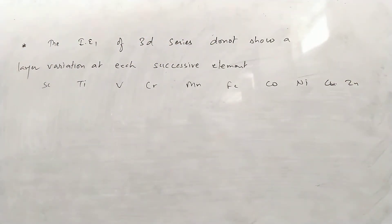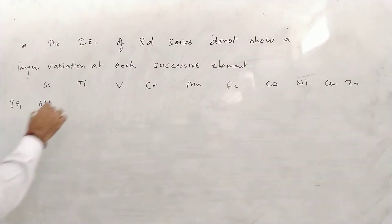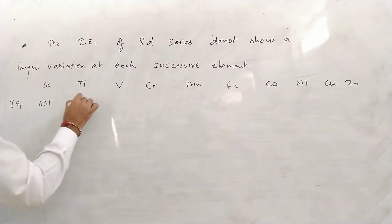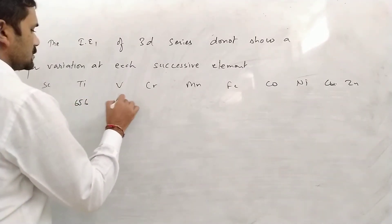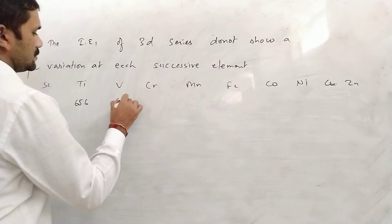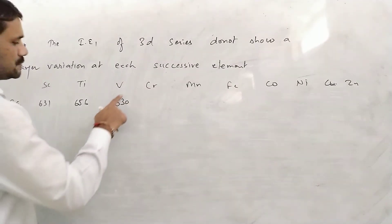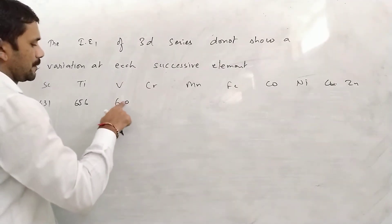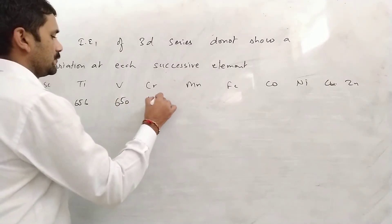For example, scandium's first ionization energy is 631 kJ/mol, titanium's is 656, vanadium's is 650, chromium's is 653. So if we look at these ionization energy values, the variation is very small.